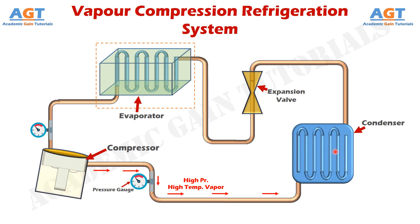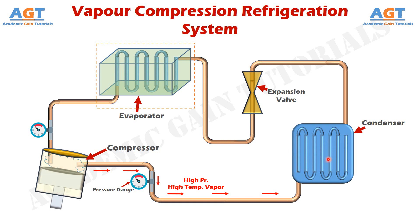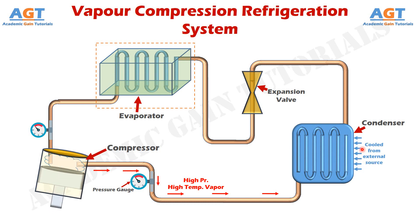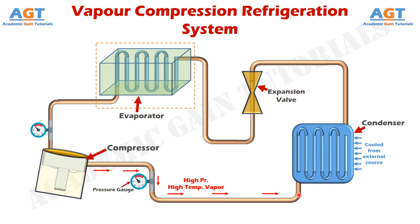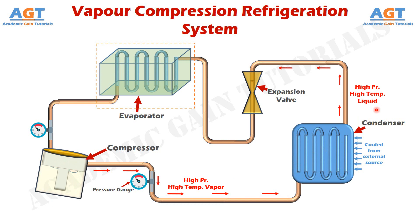Here we have a condenser. When high temperature, high pressure vapor refrigerant enters this cold condenser, the condenser absorbs the heat from the vapor refrigerant and completely converts it into liquid. The condenser can be water cooled, air cooled, or cooled by any other substance from an external source, which liberates the latent heat of the vapor entering the condenser, and thus condensation occurs. In simpler words, the condenser changes the incoming high temperature, high pressure vapor refrigerant into liquid state by changing its phase — vapor comes in, and liquid refrigerant goes out.